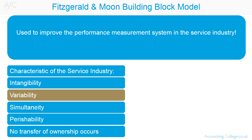Variability or Heterogeneity: output differs with services, as a consistent output can be difficult to maintain, while with the manufacturing industry, exact duplication of products is the norm. For example, with regards to a college course, the lecture given by the lecturer will differ each time it's given. The core information may be the same, but the presentation is not.